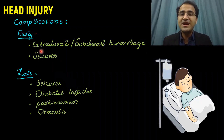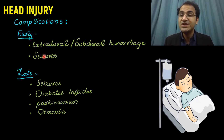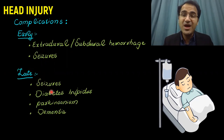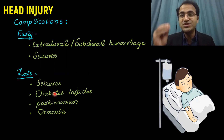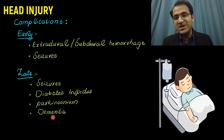Complications of head injury: early complications include extradural hemorrhage, subdural hemorrhage, and seizures. Late complications include seizures, diabetes insipidus from damage to the pituitary, Parkinsonism, and dementia.